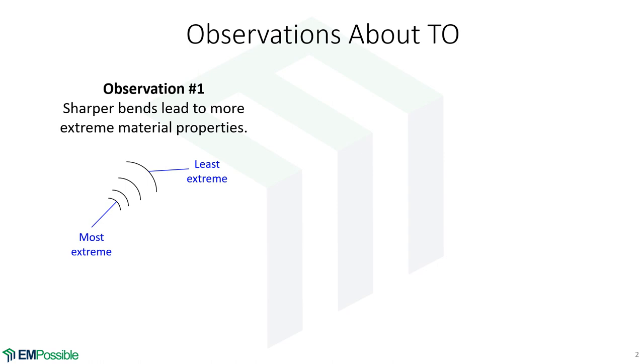So let's have some observations. If in our coordinate transform we have some really sharp bends, that leads to very extreme properties in the transform. If we need to bend those fields really fast, well it makes sense we would need extreme values in order to bend the field that quickly.